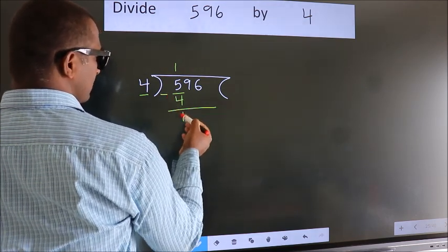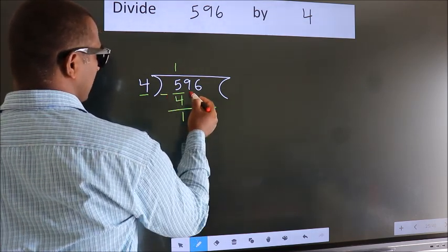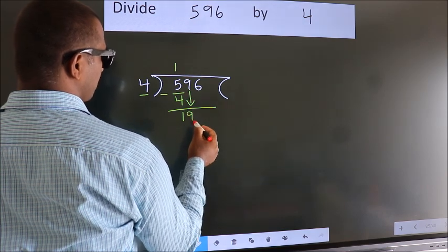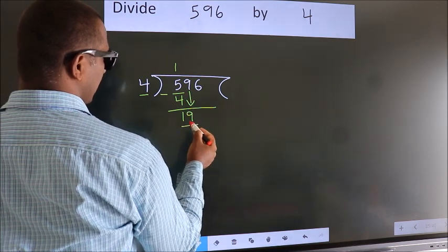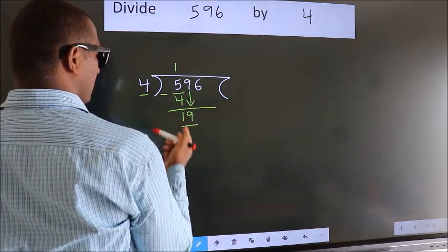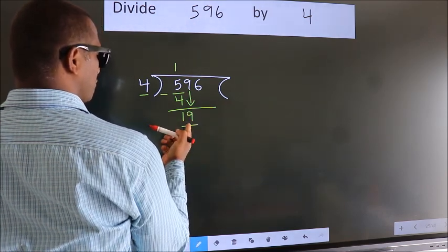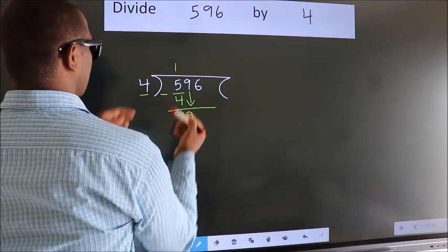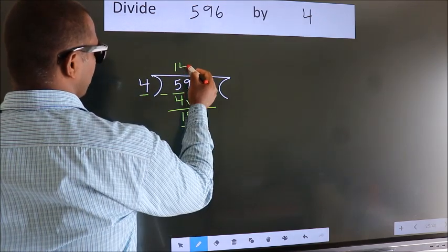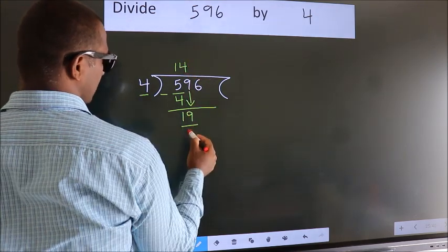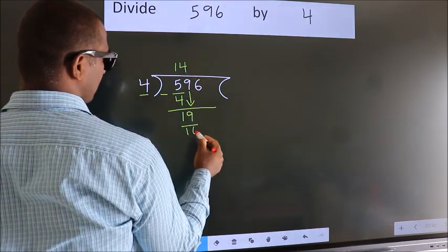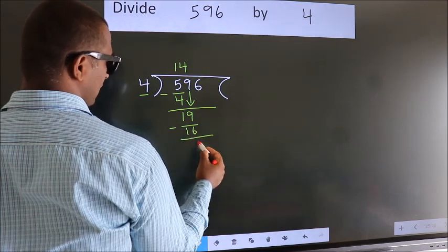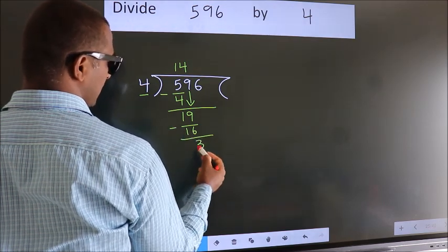After this, bring down the beside number. So, 9 comes down, making 19. A number close to 19 in the 4 times table is 4 fours — 16. Now we subtract. We get 3.